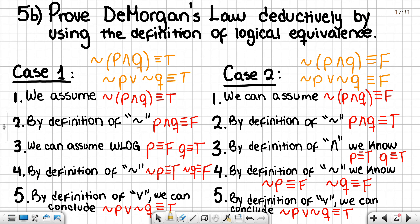Now we need to prove De Morgan's law deductively by using the definition of logical equivalence. To do this, we need to prove that if the negation of p and q is true, then so is the negation of p or the negation of q.